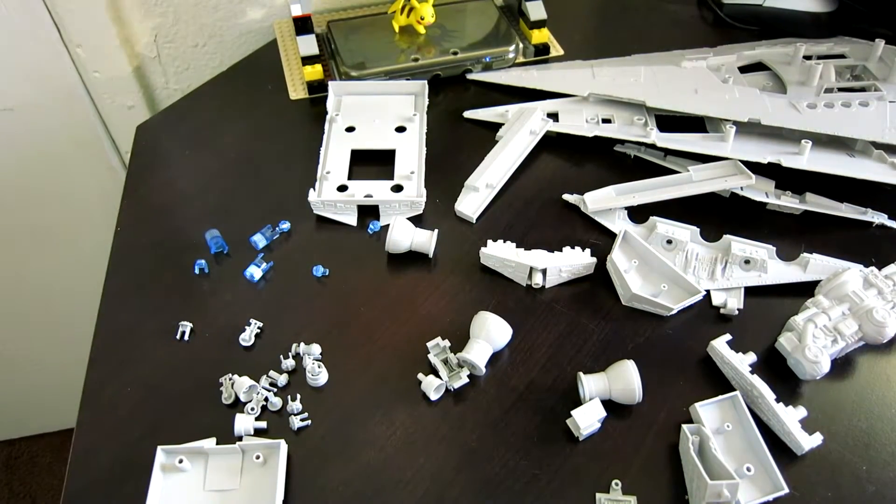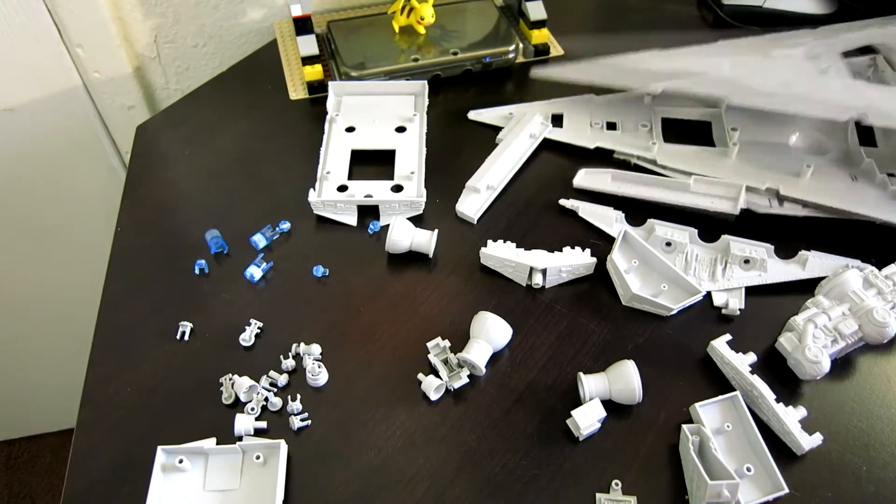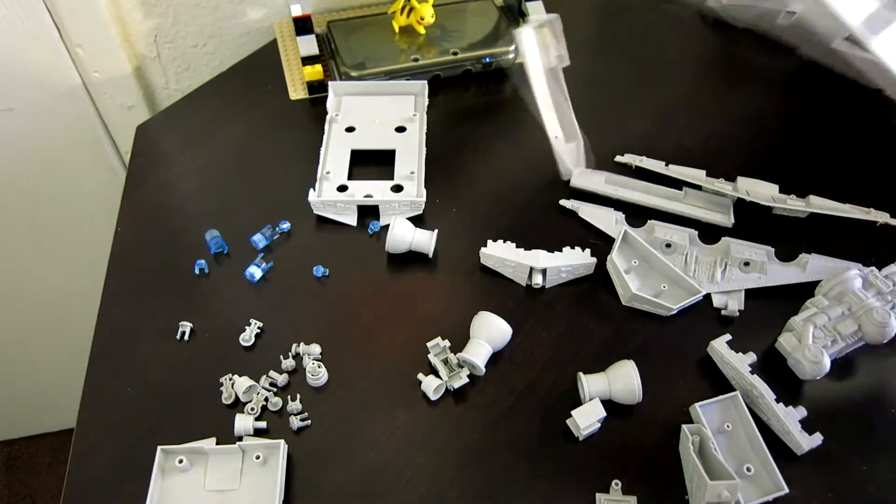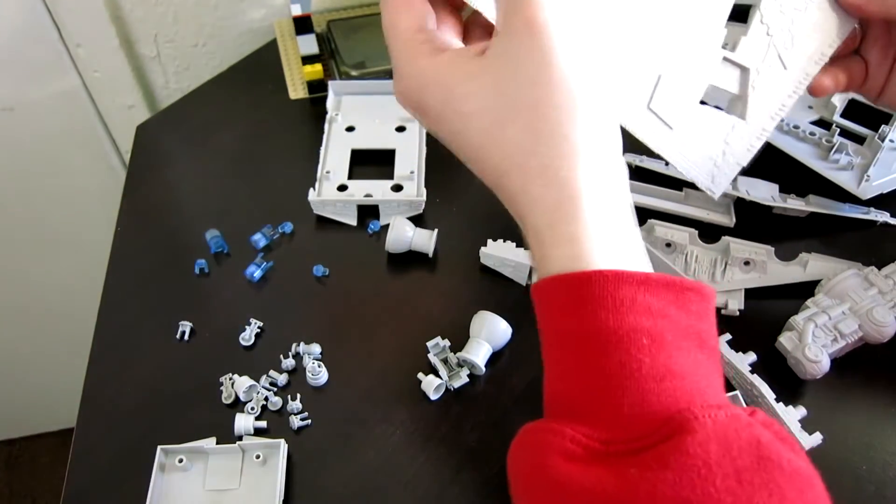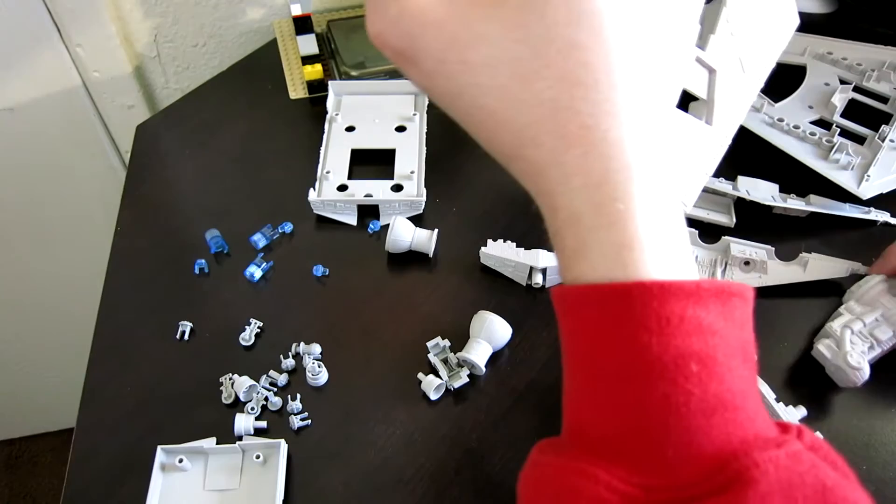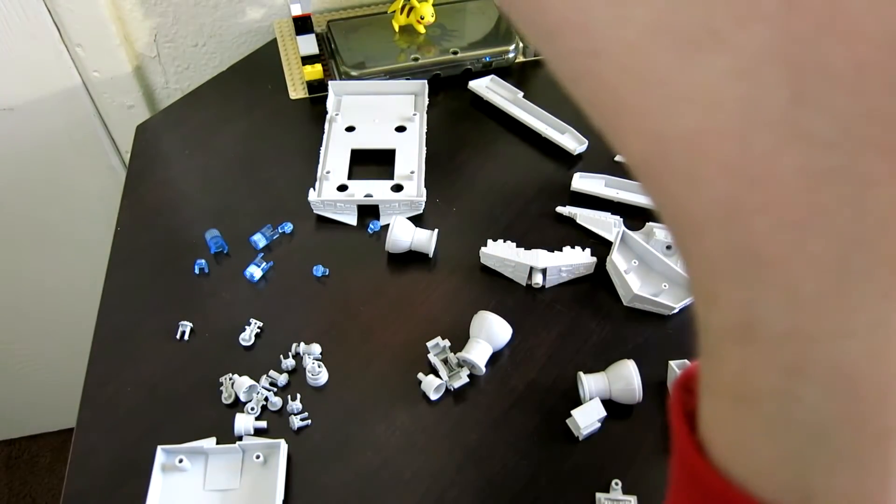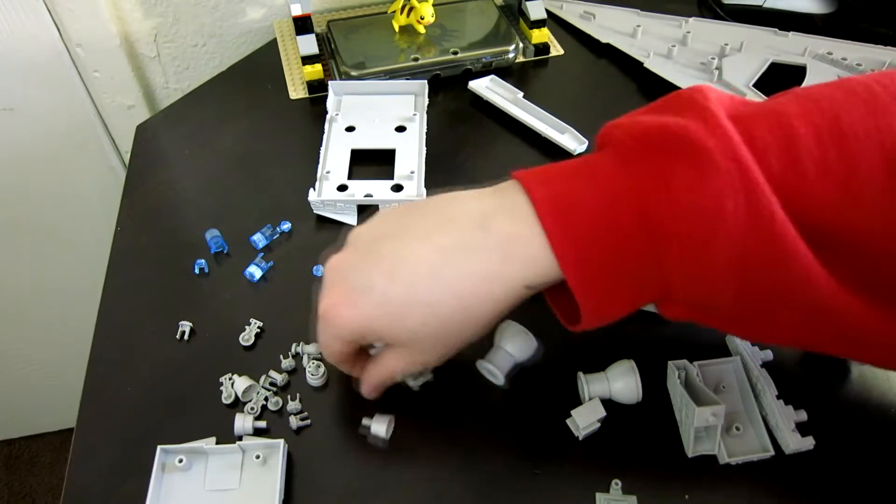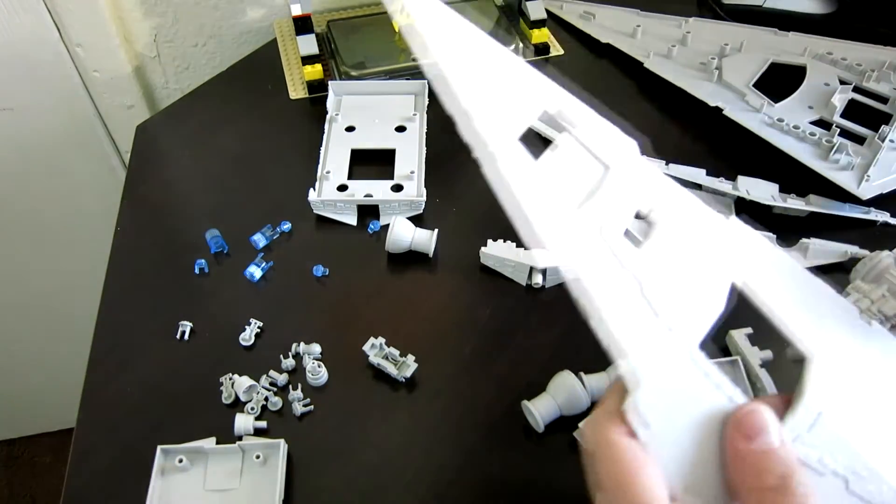I've got the instructions open off to my side and I'm basically just going to be reading off of those. I probably could do this without instructions, but I don't want to - I want to actually make it correctly. We're going to start off with the bottom piece of the Star Destroyer, which is this guy here, and then it says to install the stand pieces, so that's what we're going to do first.